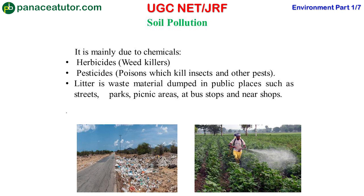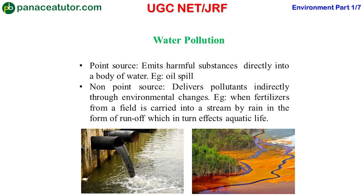Next is water pollution. We will discuss two types of sources from which water pollutants are released. First is point source, which emits harmful substances directly into a body of water. For example, oil spill — in many industries, oil is produced as waste and is dumped directly into a water body like a river or pond, which destroys the aquatic life of that water body.